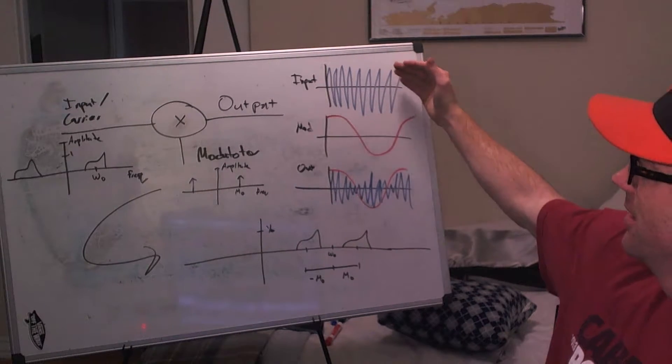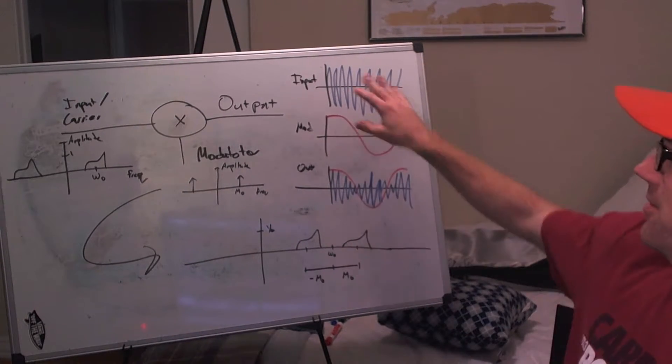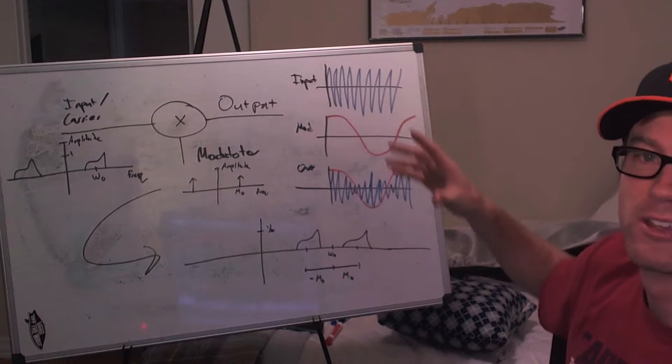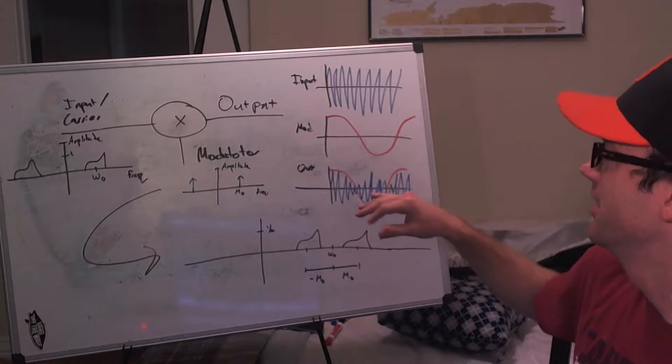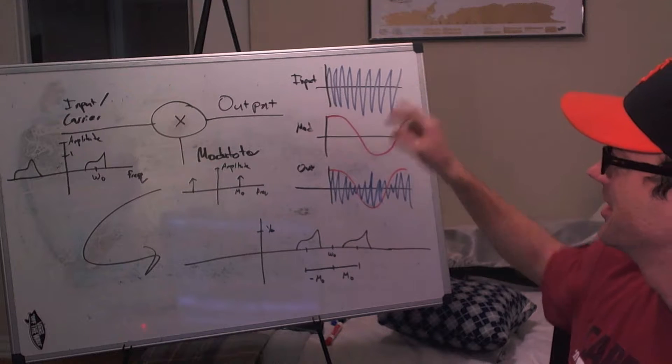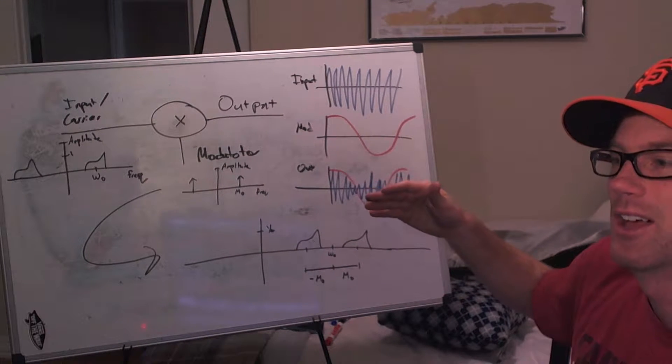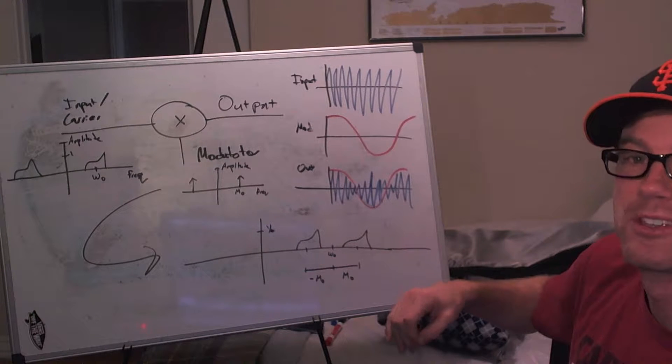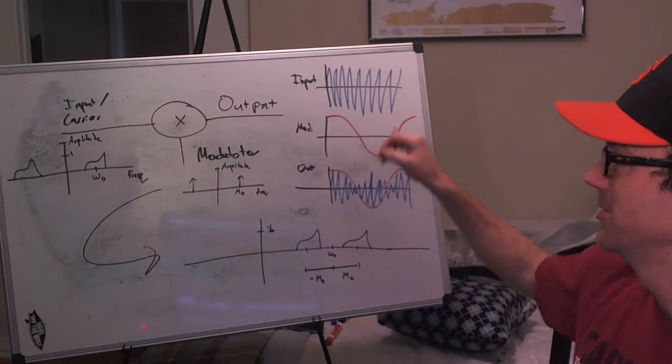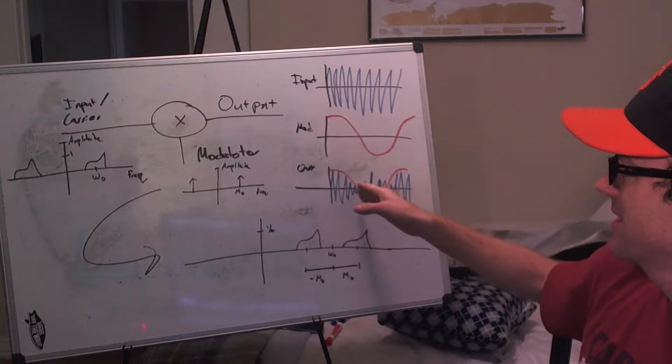Visually in the time domain it looks like this. So we have our input signal that's in the audible range and it's oscillating doing its thing. The modulating signal in this case I'm going to say is at a much lower frequency—it's a low frequency oscillator compared to the input.